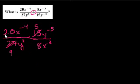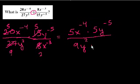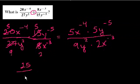If you divide this by 4, you get 5. If you divide this by 4, you get 2. I don't want to do too many steps all at once. You get 5x to the minus 4th times 5y to the minus 5th, all of that over 9y squared times 2x to the minus 3. So let's see, let's get all the numbers out. So that is equal to, 5 times 5 is 25, 25 over 9 times 2 is 18.